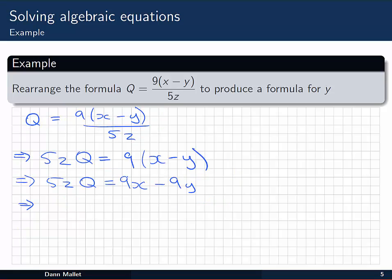Next, I want to get rid of the 9x, because I want to get y by itself, so I'm going to subtract it from both sides. I have 5zQ minus 9x on the left, and subtracting it from the right, it goes away. It cancels with the 9x, so I'm left with minus 9y.